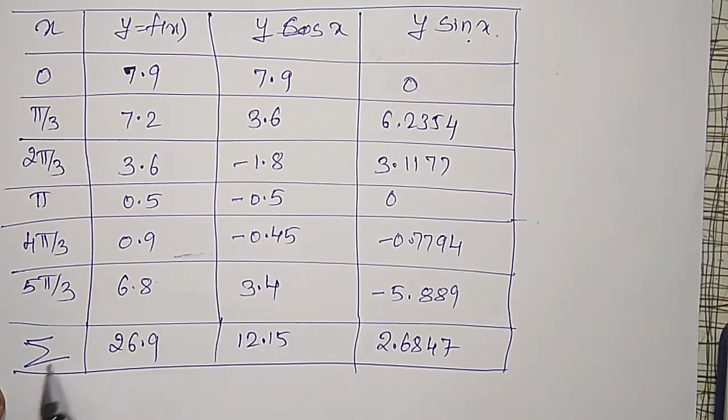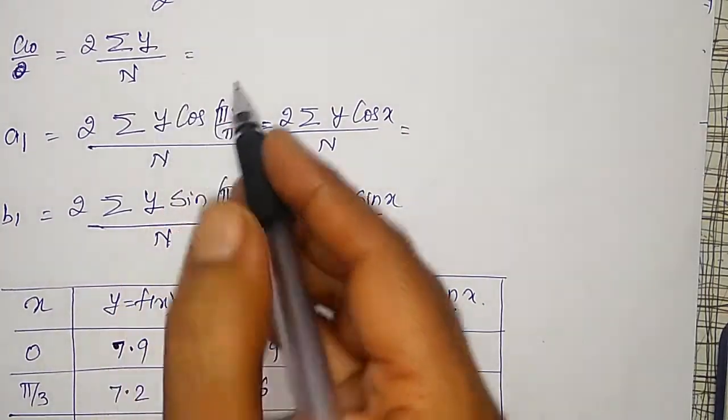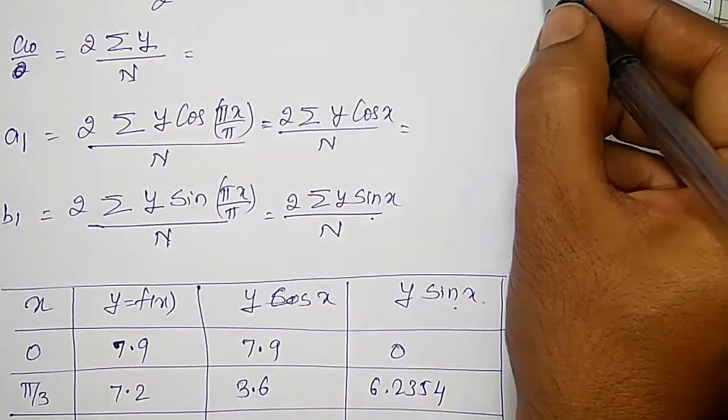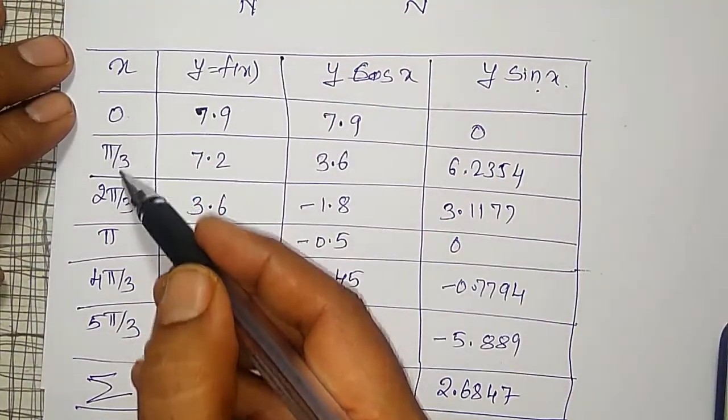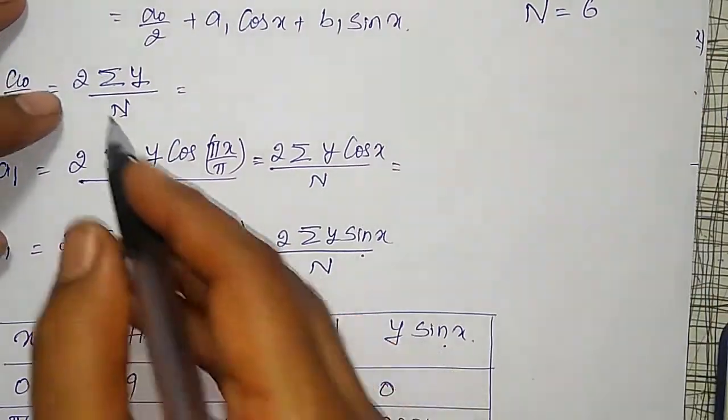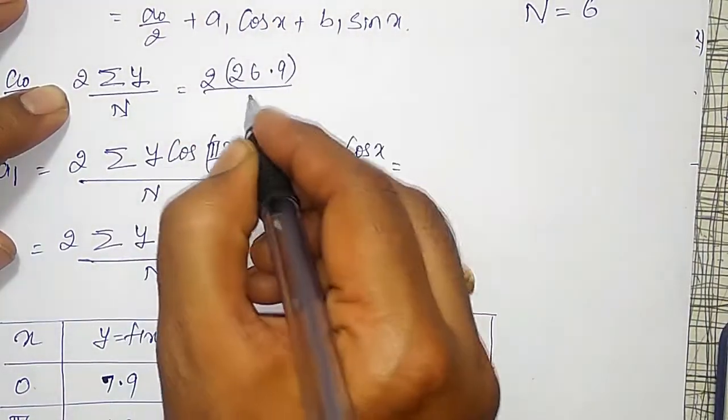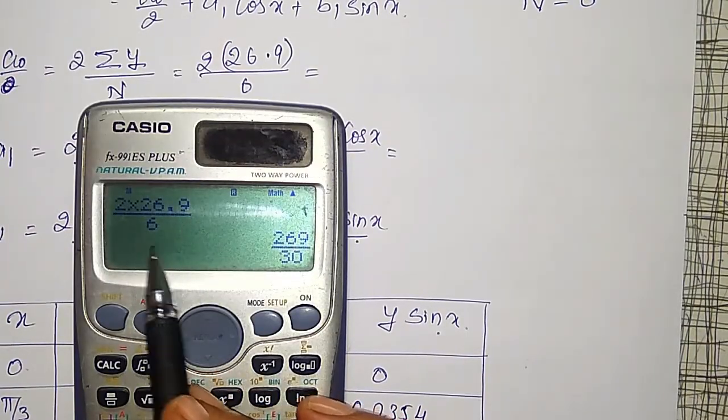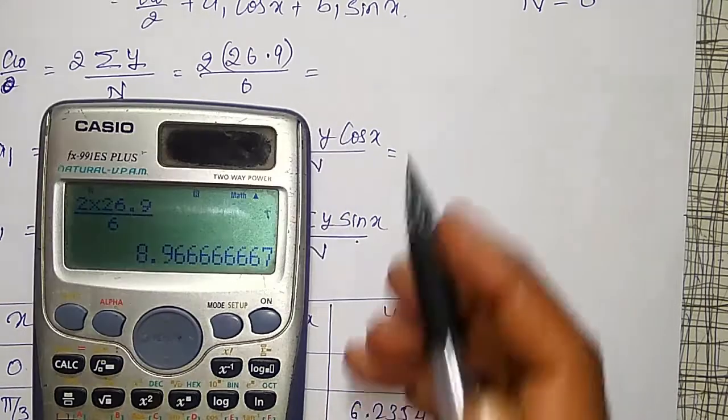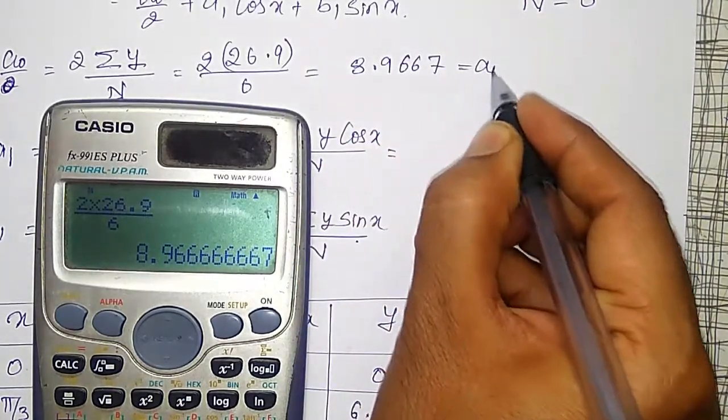A_naught is 2 times summation, and one more thing, capital N equal to total number of observations, how much observations they have given here, 1, 2, 3, 4, 5, 6, total 6 observations they have given. That is capital N equal to 6, and 2 into summation of y, that is 26.9 divided by 6. If you operate 2 into 26.9 and divide by 6 equal to, this outcome comes out to be 8.9667. This is my a_naught value.